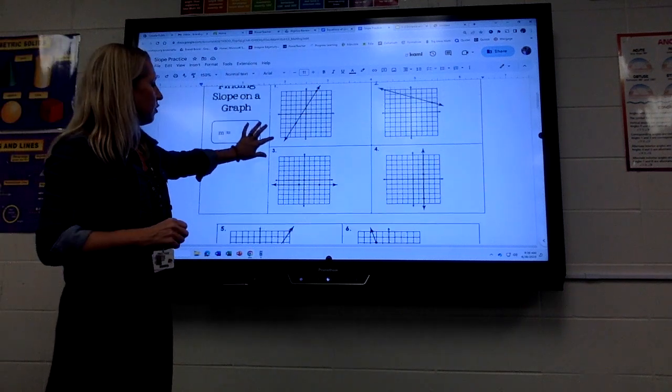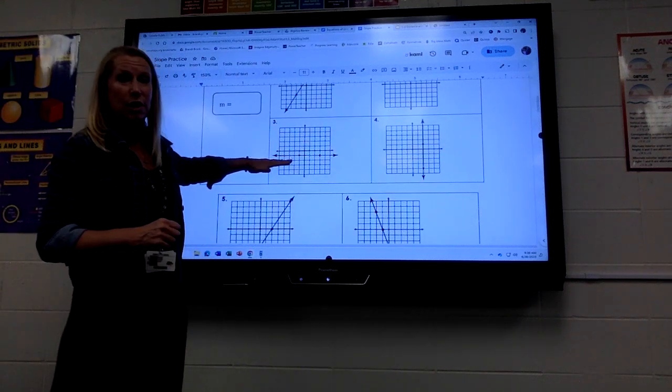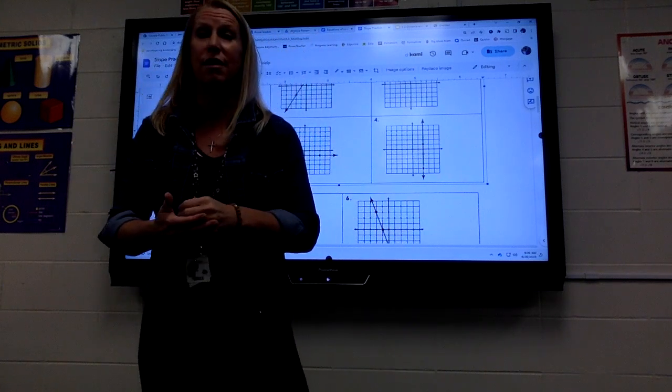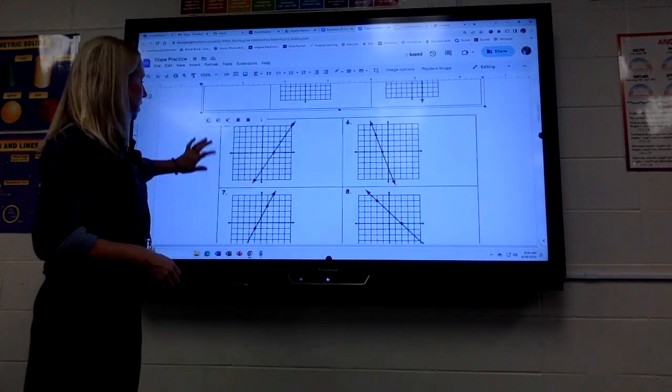So hopefully that helps. If you see a horizontal line, do you remember what the slope is? That would be 0. If you see a vertical line, that slope is undefined. So that's how you do that first section.